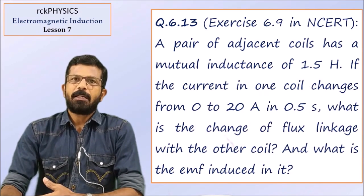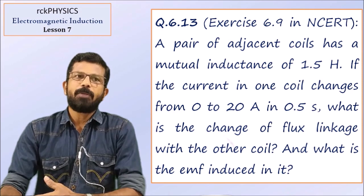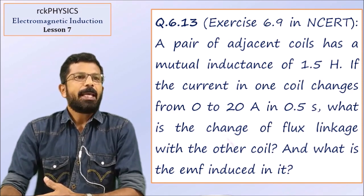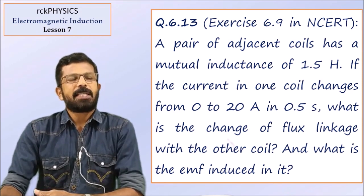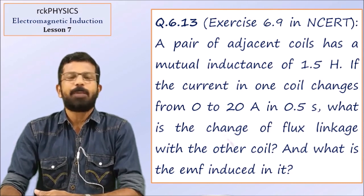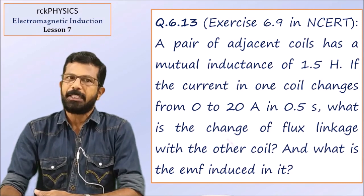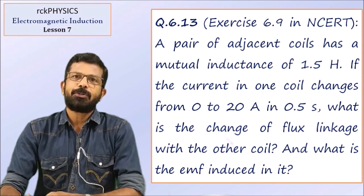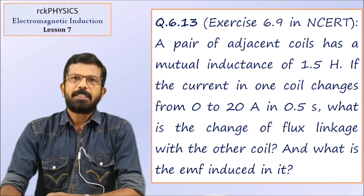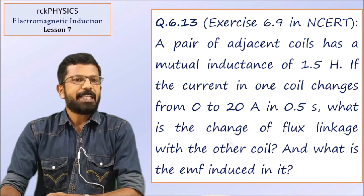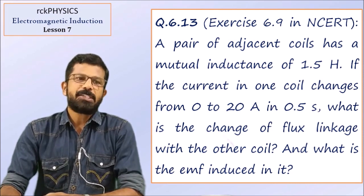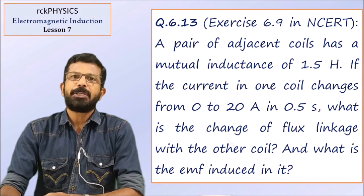Exercise number 6.9. A pair of adjacent coils has a mutual inductance of 1.5 Henry. If the current in one coil changes from 0 to 20 ampere in 0.5 second, what is the change of flux linkage with the other coil, and what is the EMF induced in it?